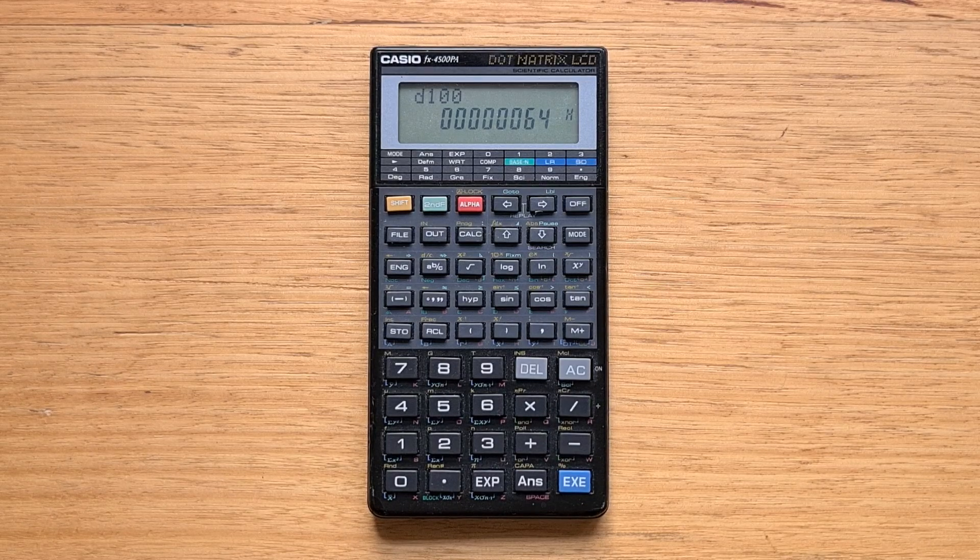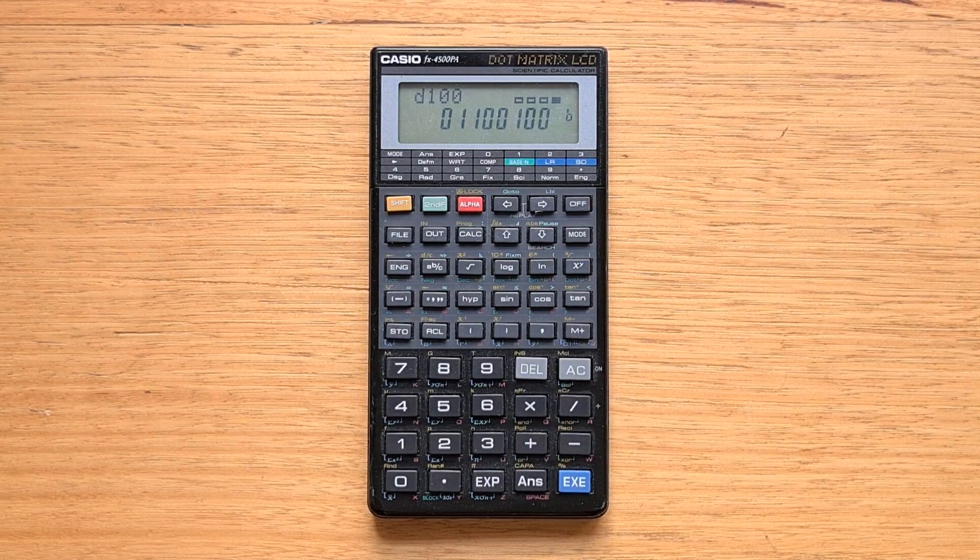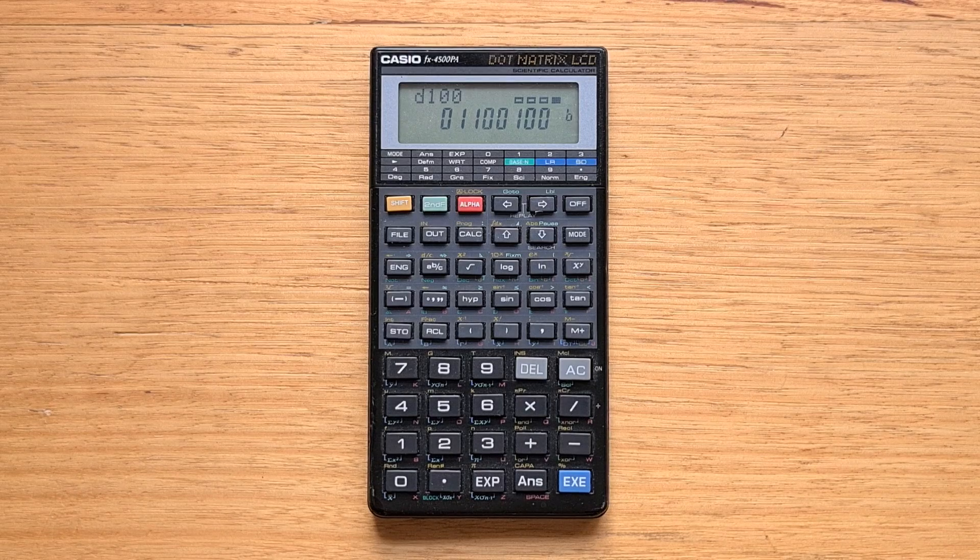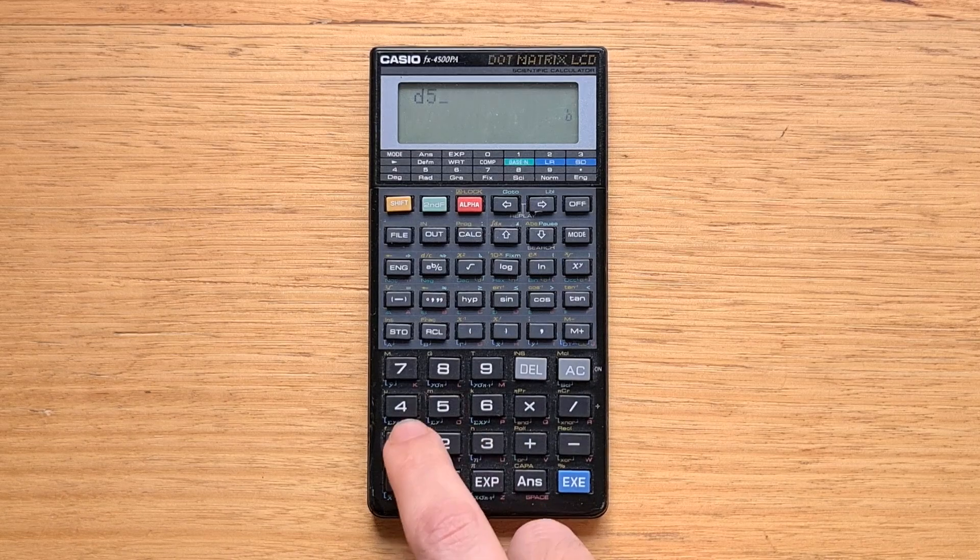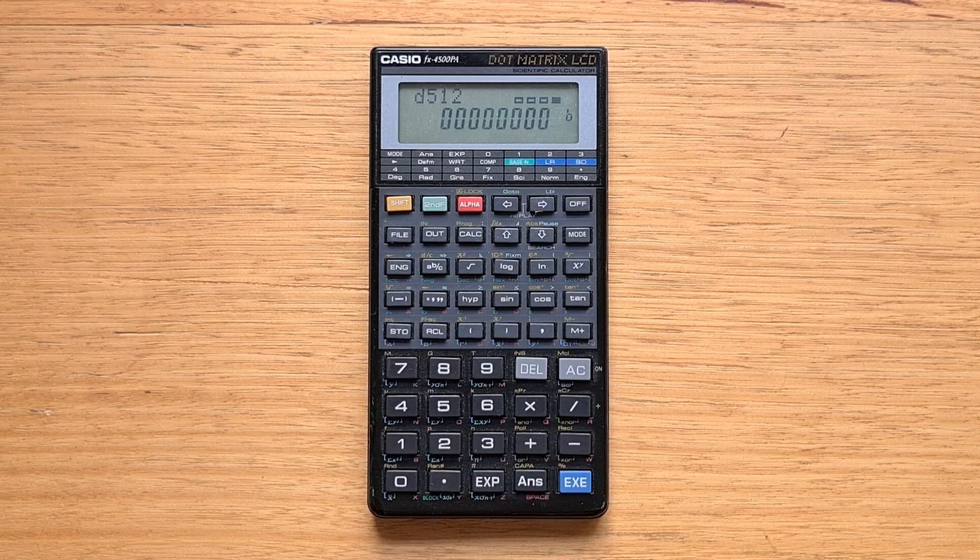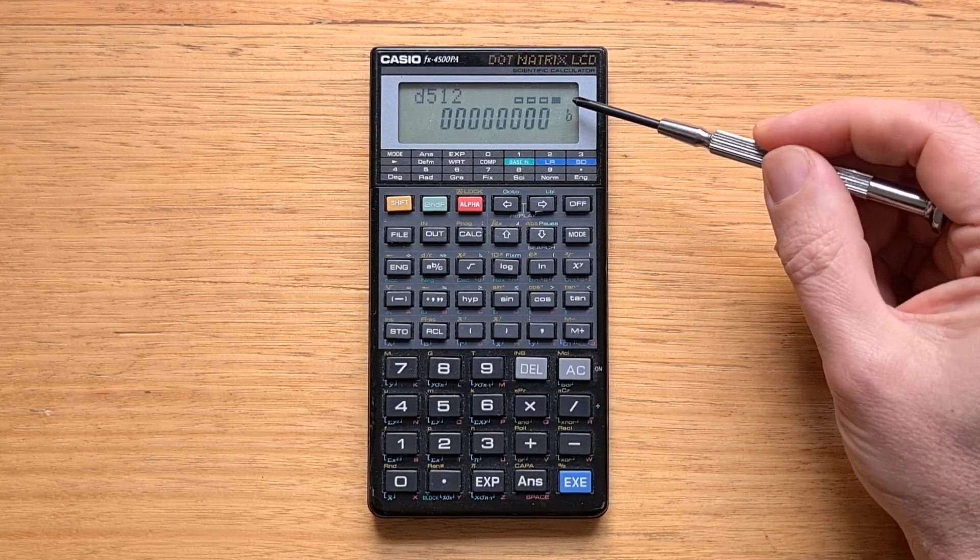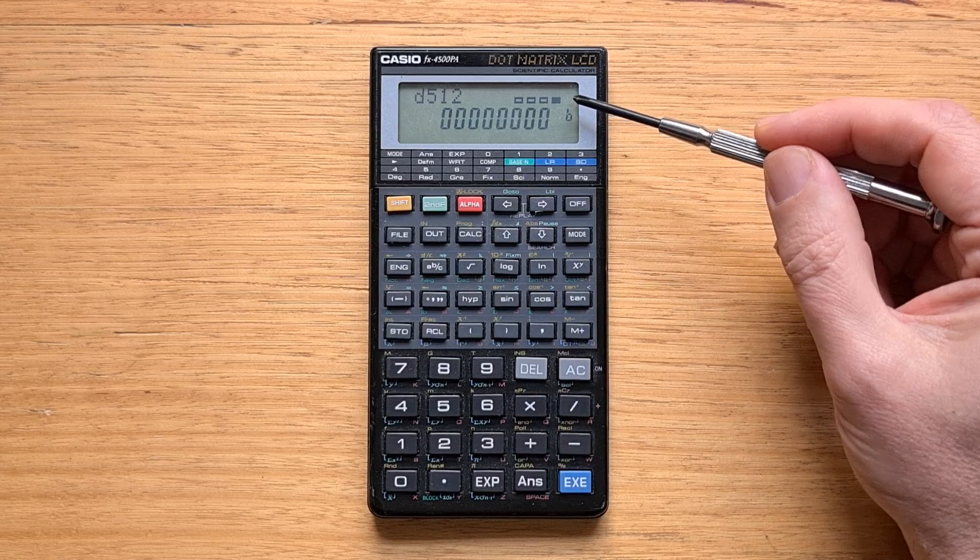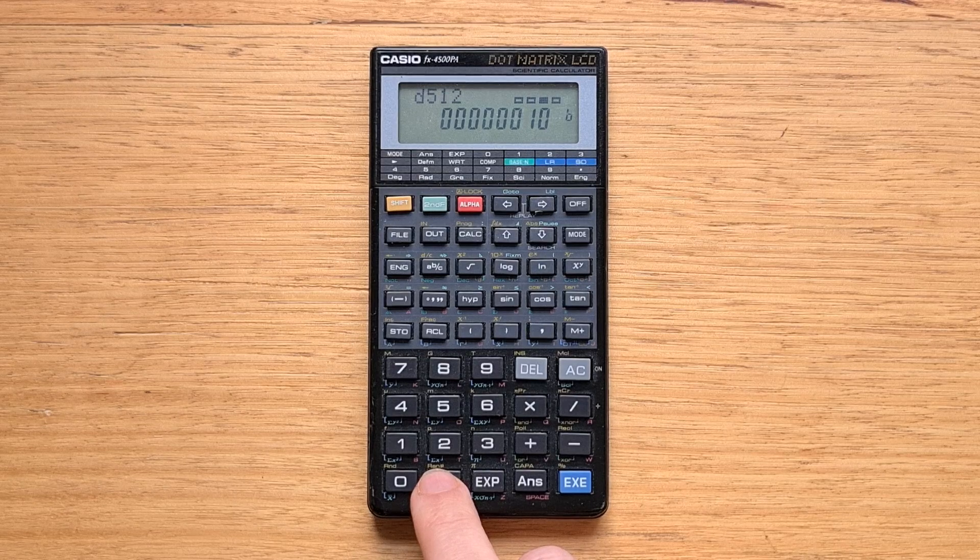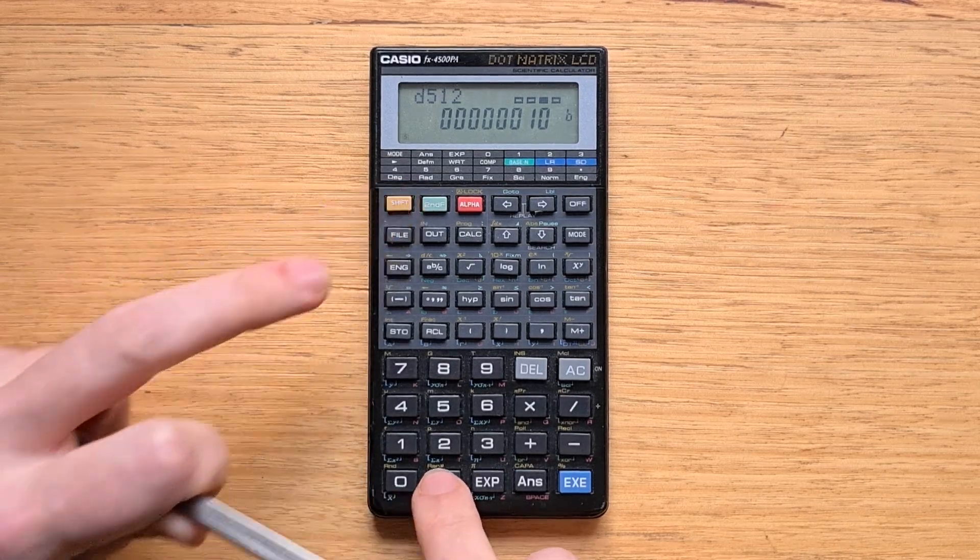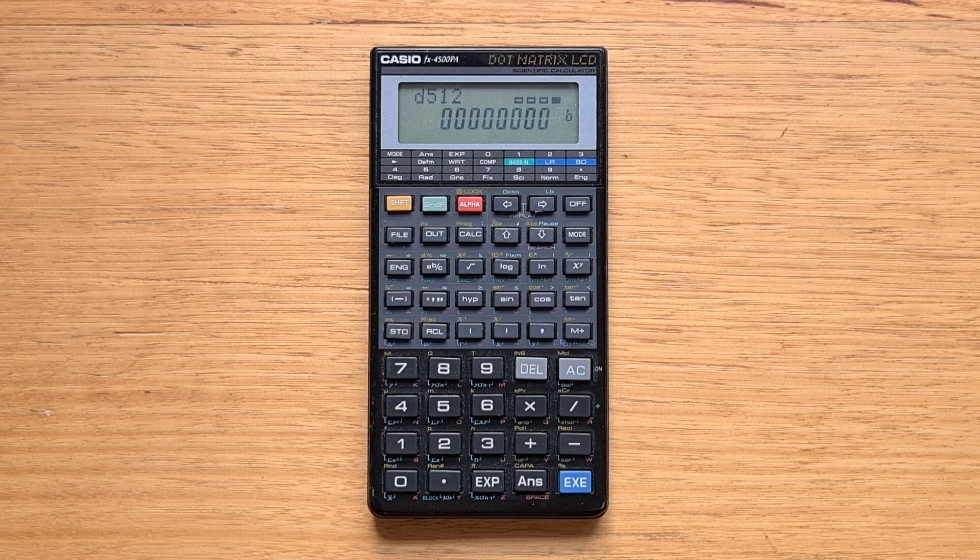The way that binary mode works is interesting because it supports 32-bit numbers. We can switch to binary using the natural log key. Let's convert 512 decimal to binary. So again, shift square root 512. We can see this block view up here. Currently we're looking at the rightmost 8 bits, and we can hit the dot key to move to the higher block and shift dot to move back down again.